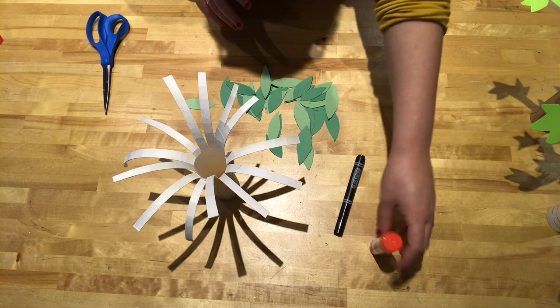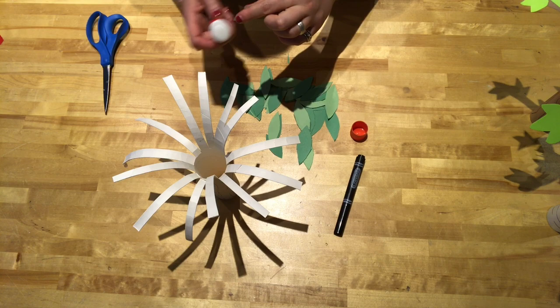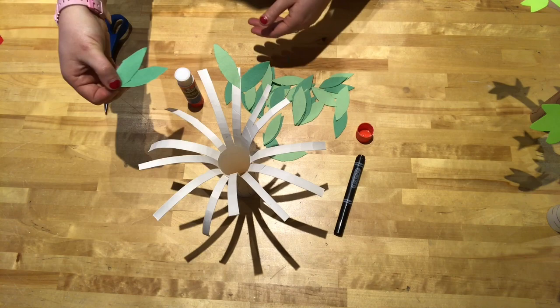Now I'm going to pick out some leaves and start gluing them onto my tree form here. So when I'm gluing I like to hold the smaller piece and put it against the glue like this so that I don't have to glue against the table and get everything all sticky.